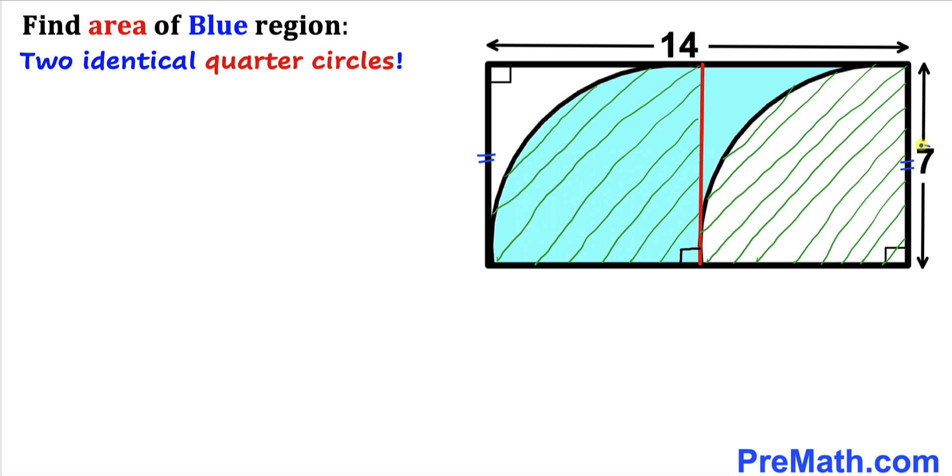If this side length is 7 units, so this side length has got to be 7 units as well. Moreover, the radius of this quarter circle is 7 units and we can see that this is the radius of the quarter circle as well.